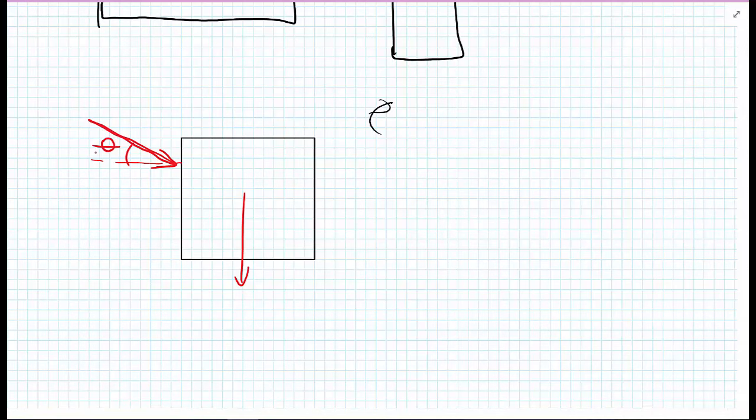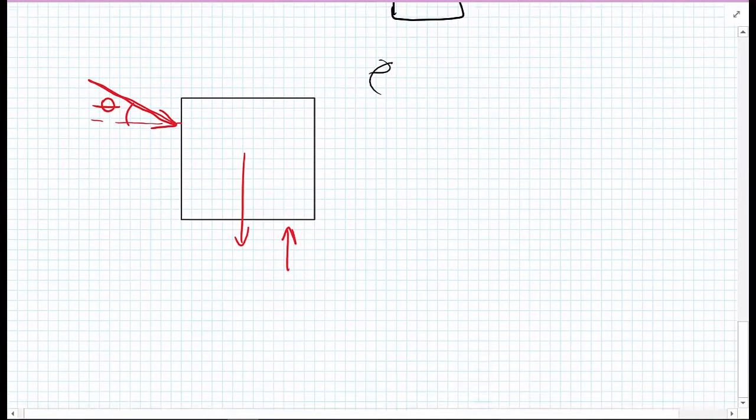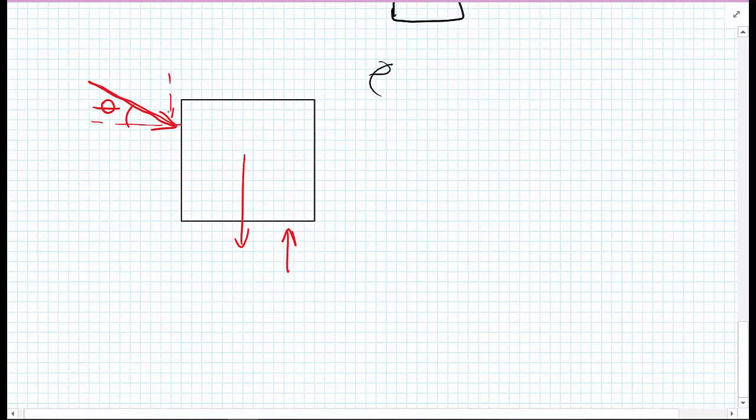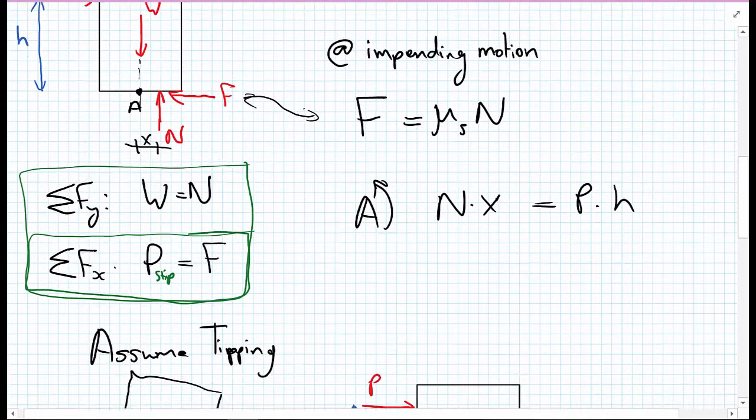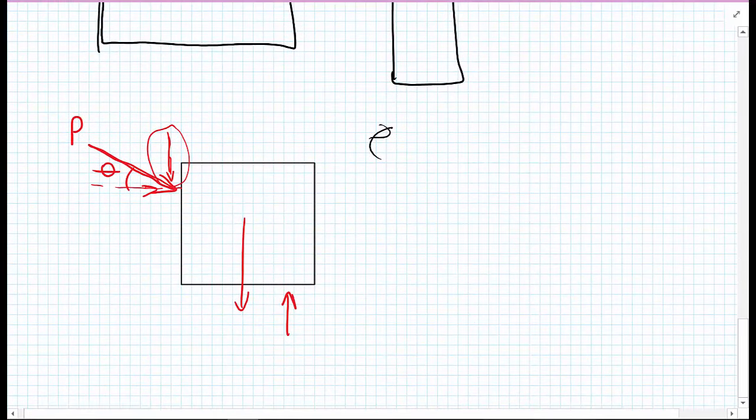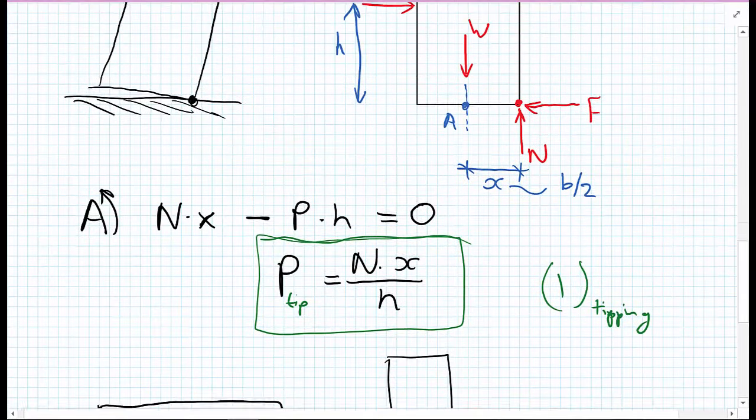When you consider the case now for this, if you want to calculate where N is, say for the slipping case, you need to consider the Y component of your force P acting there. So this formula here, P_slip equals F, no longer holds true. Always draw a free body diagram for the situation you are considering and don't rely on formulas like this.